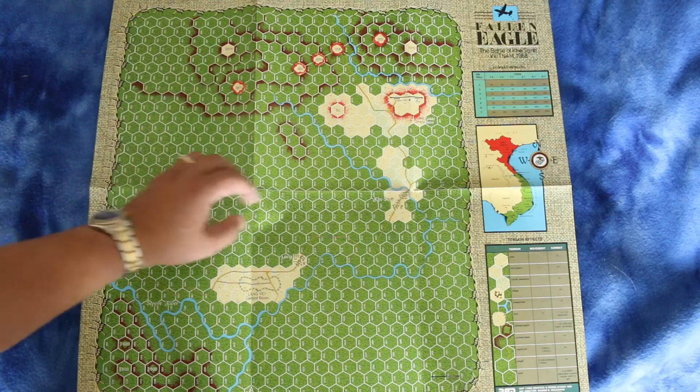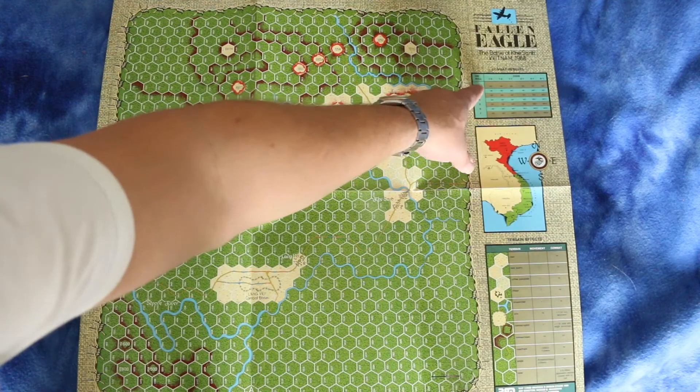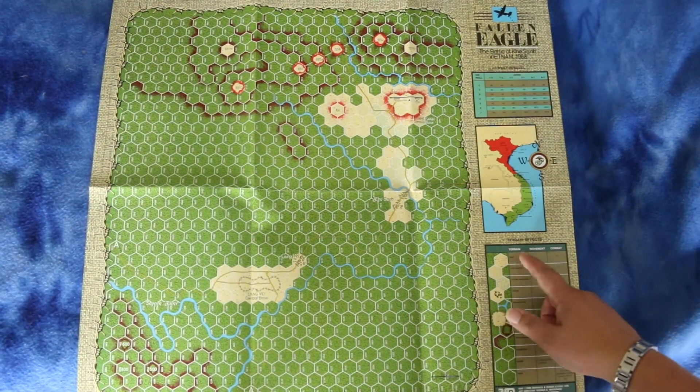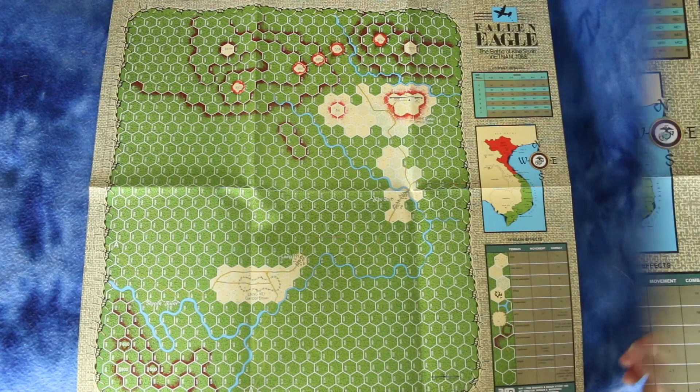And here's the various hills like 950, 558, 861A, 861, 881 South and 881 North. And here's Khe Sanh combat base. It's got a combat results table on the map, and down here it has a terrain effects chart which has terrain movement and combat effects.